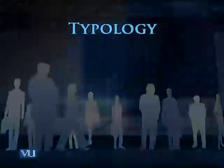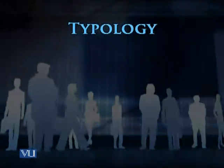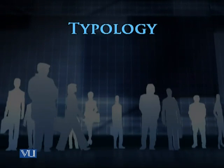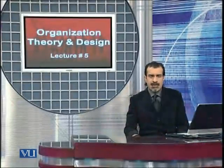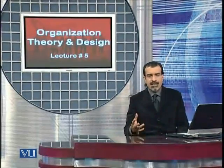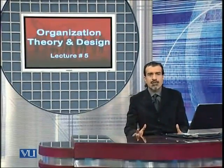Miles and Snow's strategies are divided into four types. There are four typologies: prospector, defender, analyzer, and reactor. We will now see what each of these four types of strategies represents.